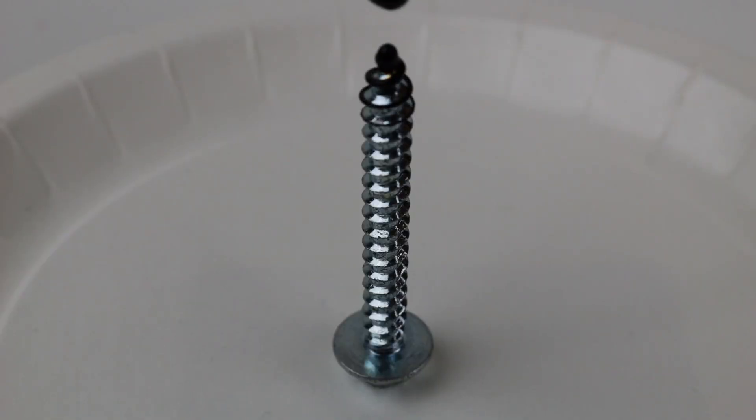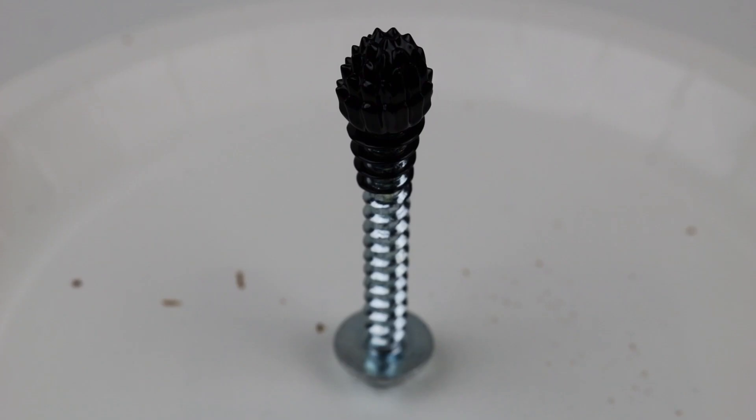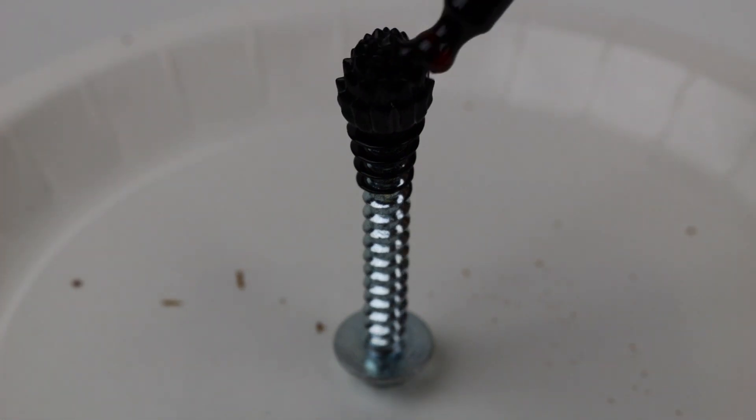So let's try something else. We will try a screw. I will drip some ferrofluid on it. It's shaped like a flower or cactus maybe. I don't know, we can move it around with a pipette.